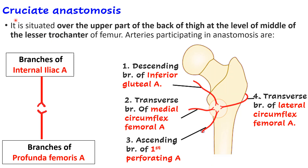The second anastomosis is the cruciate anastomosis, present in the upper part of the back of the thigh at the level of the middle of the lesser trochanter of the femur. This anastomosis is also between branches of the internal iliac artery and branches of the profunda femoris artery.